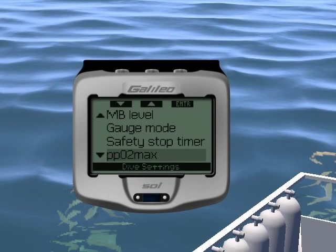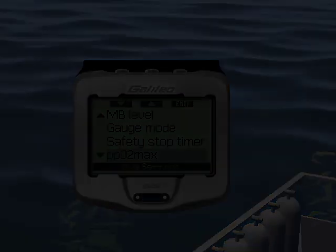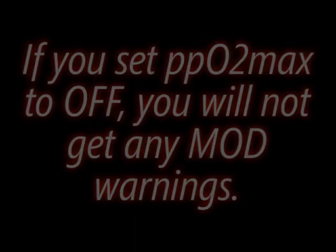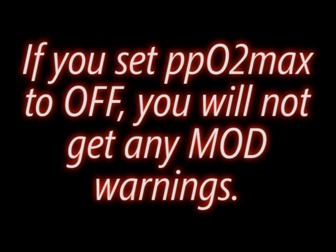Let's look at the PP02 Max submenu. The value of PP02 Max determines your maximum operating depth based on your gas mix. You can set this value between 1.2 bar and 1.6 bar, or to off. If you set PP02 Max to off, you will not get any MOD warnings.